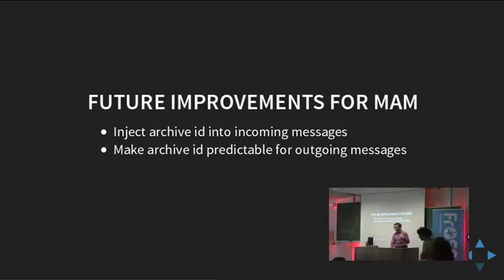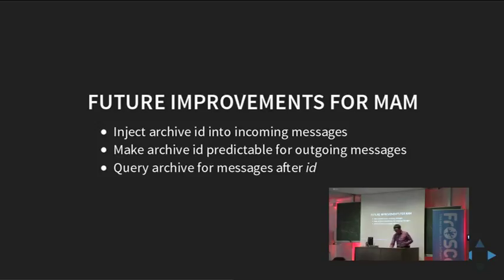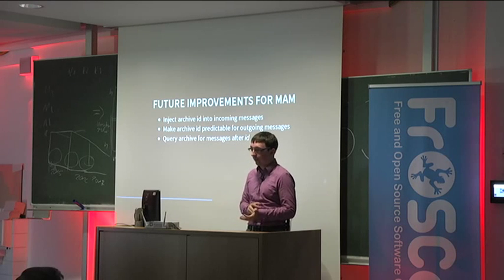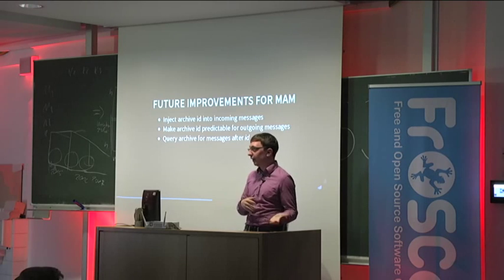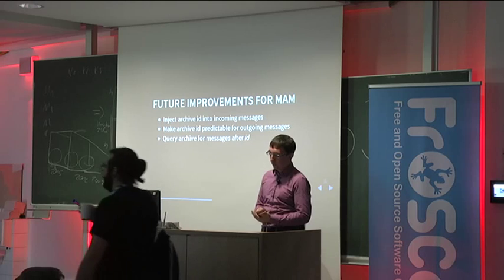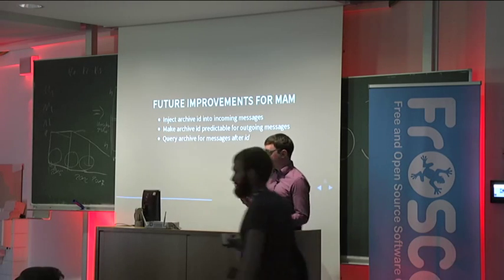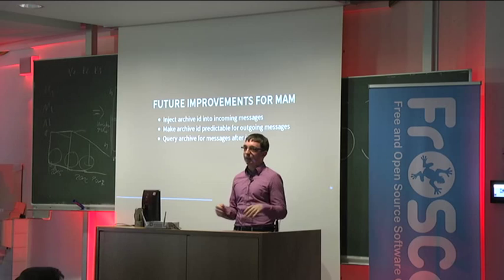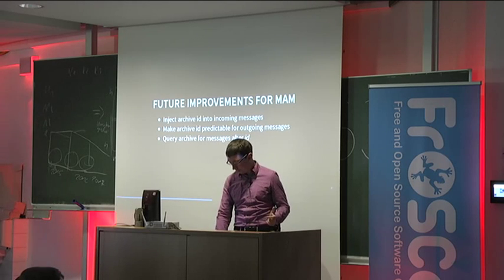The approach currently being discussed is to make outgoing message IDs predictable by combining the stream ID or similar. This would also solve duplication issues — if you query the archive without exact timing, you might get messages twice. Having a global ID assigned by the server for each message will definitely solve these problems as well.